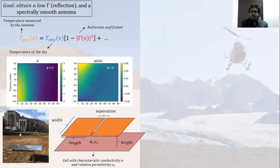Now in antenna design, our goal is to obtain a low reflection antenna and also a spectrally smooth one. In terms of reflections, this can be understood by looking at this equation here, where you can see that if we minimize the reflection coefficients, the temperature measured by the antenna approaches the temperature of the sky.